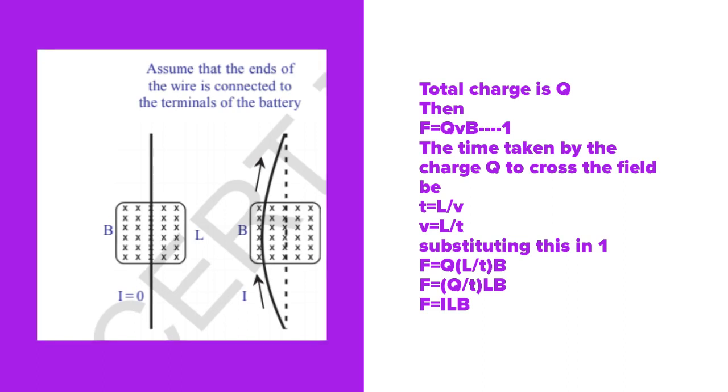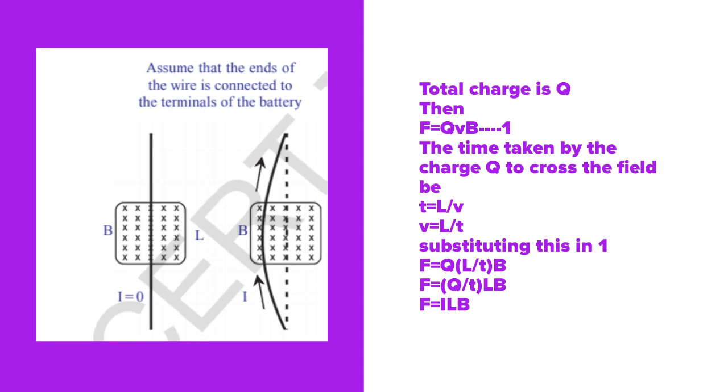Then F can be written as (Q/t)LB. Next, F = (Q/t)LB, and Q/t equals I, so F = ILB. Don't confuse—F = ILB because Q/t is taken as I, which is the definition of current. Current = Q/t, that's why current is denoted by I.